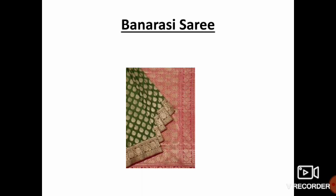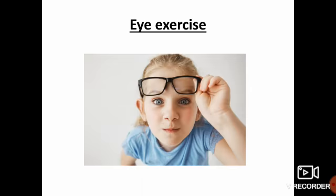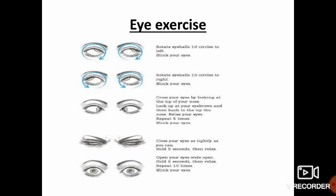Are you clear about drama and art and craft, children? This is time for your eye exercise. Rotate your eyeballs 10 circles to the left. Blink your eyes, then rotate your eyeballs 10 circles to the right and blink your eyes. Cross your eyes by looking at the tip of your nose. Look up at your eyebrows, then back to the tip of the nose. Relax your eyes. Repeat 5 times.